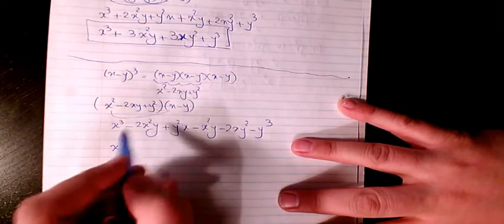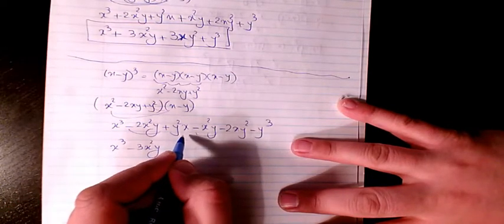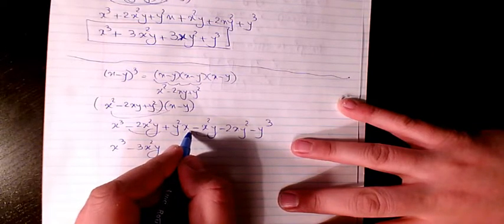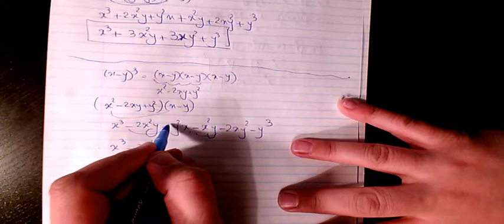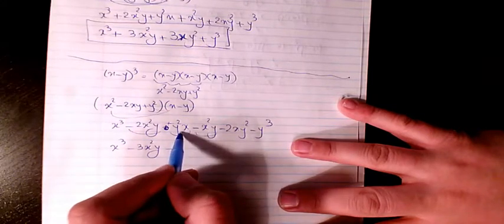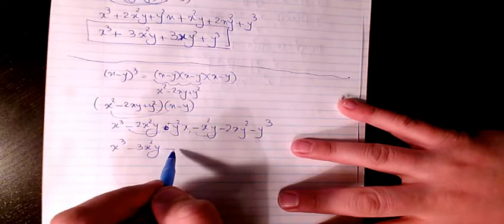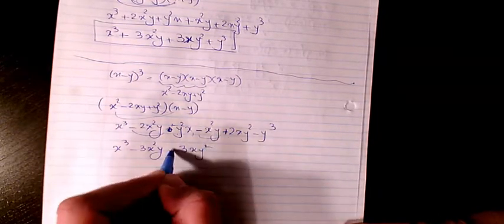Then I simplify it. I have x³. These two terms — -2x²y and -x²y — together make -3x²y. For the xy² terms: negative 2xy times negative y gives positive 2xy², plus the x·y² term, so together that's positive 3xy². And finally minus y³.